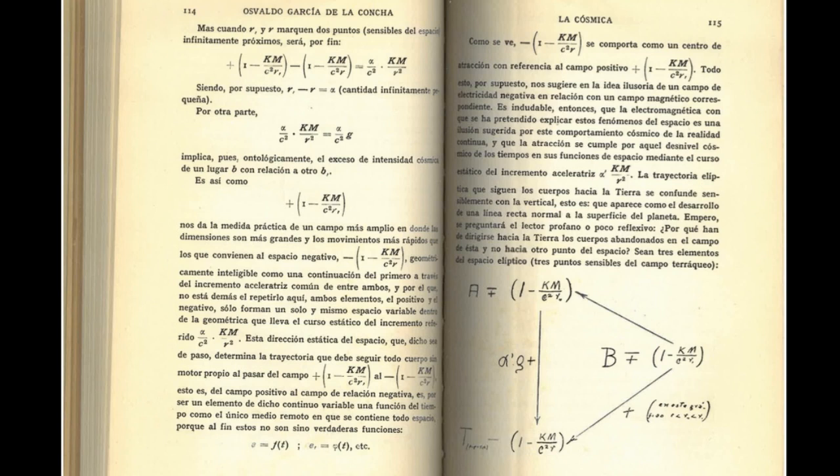km divided by c square v square minus k square m square divided by c to the fourth m b cube, which is enough to demonstrate our assertion that it's greater than.